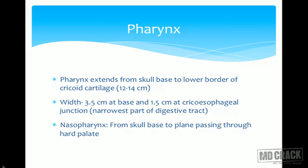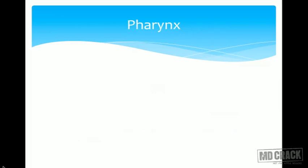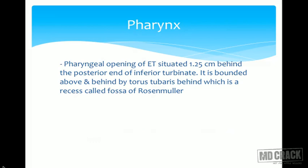The pharynx is divided into three parts: nasopharynx, oropharynx, and hypopharynx or laryngopharynx. The nasopharynx extends from the skull base to the plane passing through the hard palate. The pharyngeal opening of the Eustachian tube is situated 1.2 cm behind the posterior end of the inferior turbinate, bounded above and behind by the torus tubarius, behind which is the fossa of Rosenmüller.